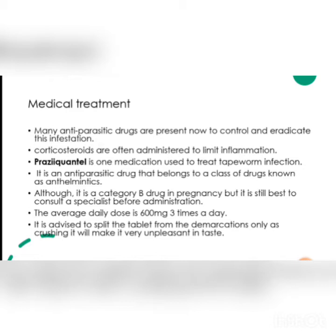Two of the more common and effective antiparasitic drugs are discussed here. The first is Praziquantel, an antiparasitic drug also known as an antihelminthic. The average dose is 600 mg three times per day. One very distinct feature of this drug is that it tastes very bad, so the doctor always advises never to crush the tablet, as that makes patient compliance very difficult.